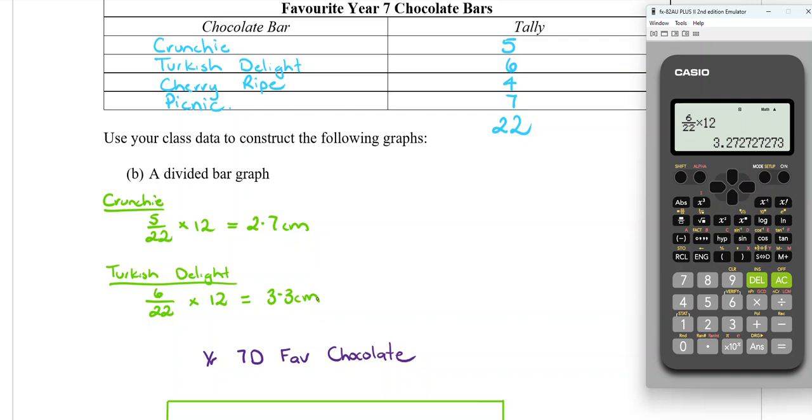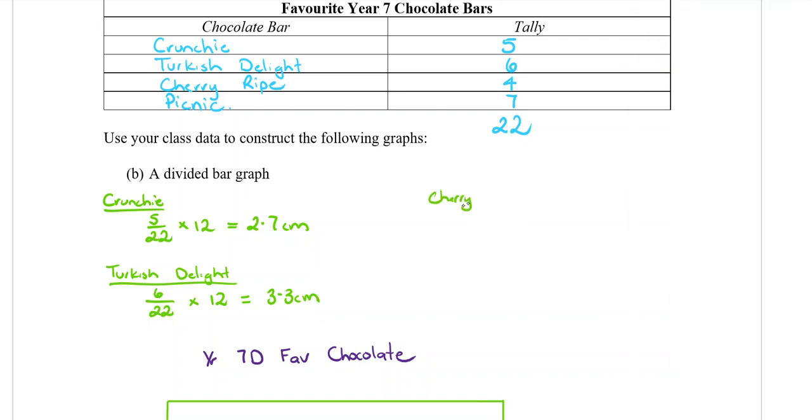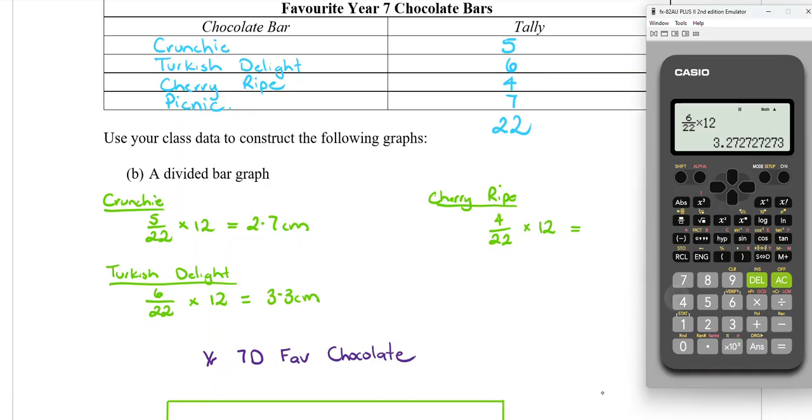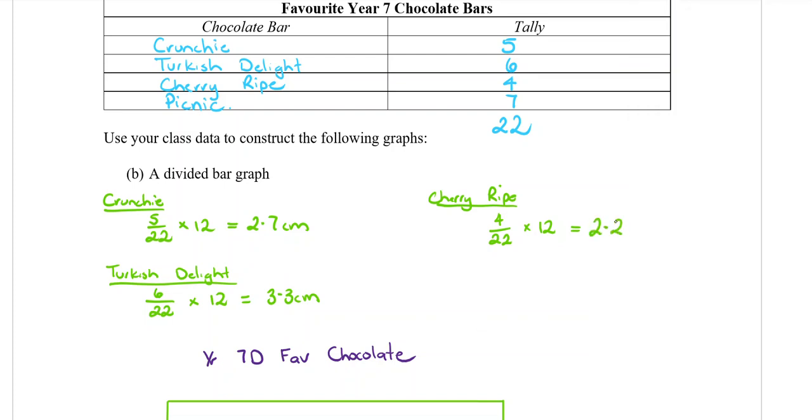On to the next one, we now want the Cherry Ripe. So Cherry Ripe, the fraction of people that like Cherry Ripe was 4 out of 22 and we times it by the length of the bar which is going to be 12. So as a decimal that will be 2.2 if we're doing one decimal place.